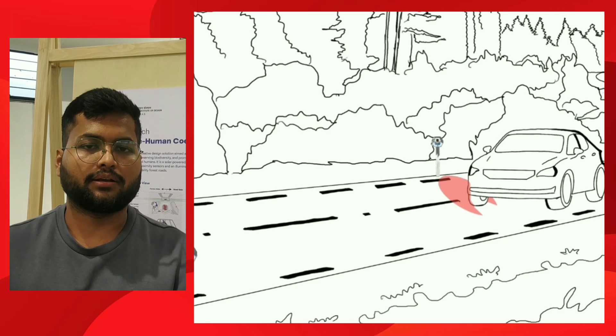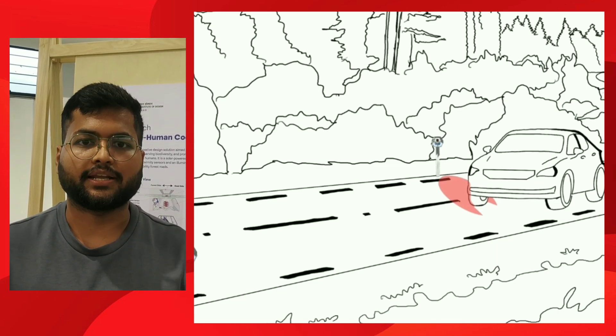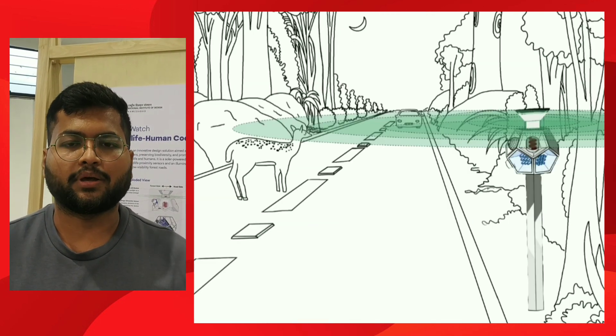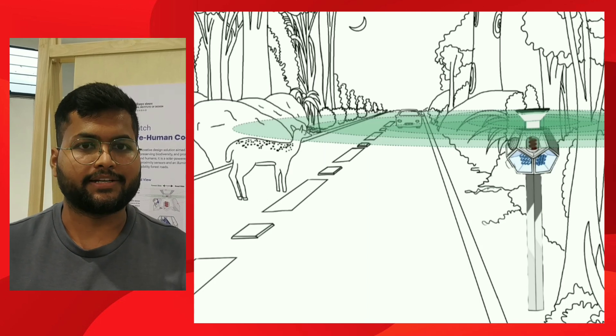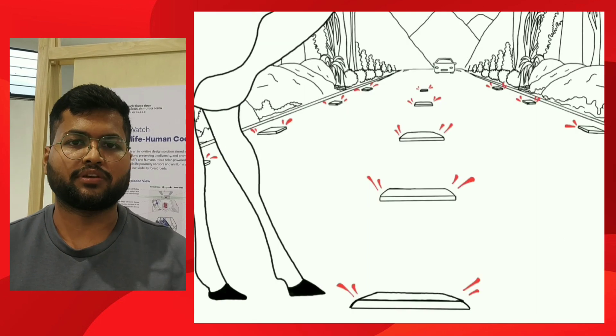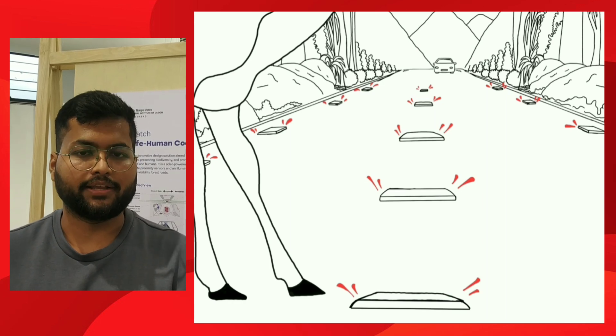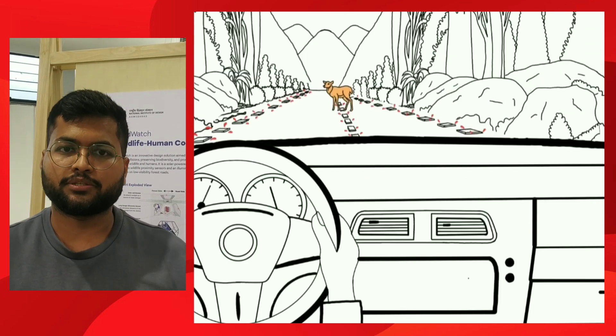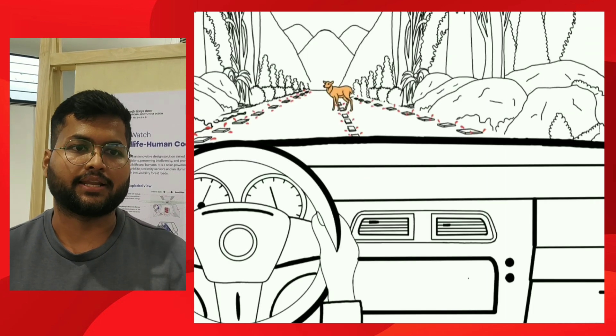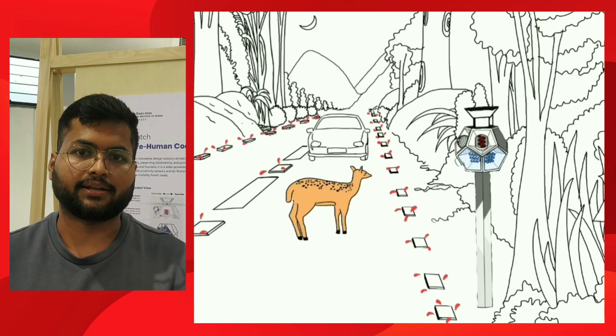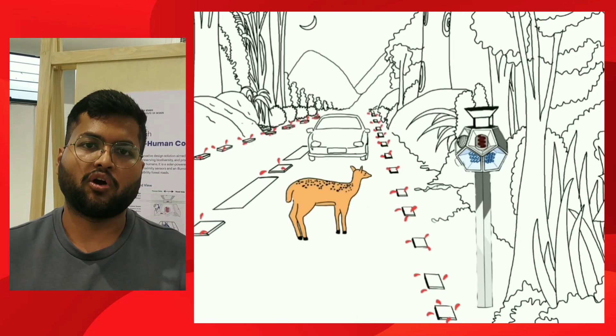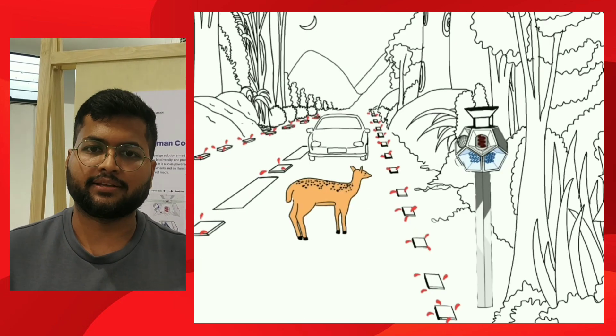When an animal is detected, the device activates the blinking lights. The light is not intrusive and won't affect the animal's behavior. For over-speeding vehicles, the driver is warned that this is a spot where accidents can occur, prompting them to slow down. This is how Wild Watch works.